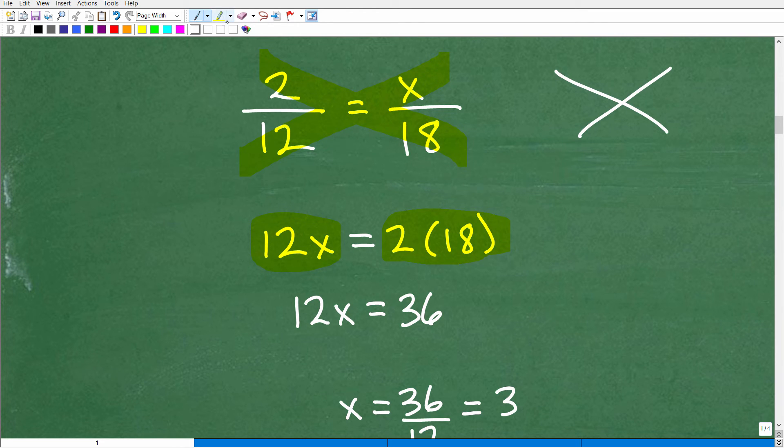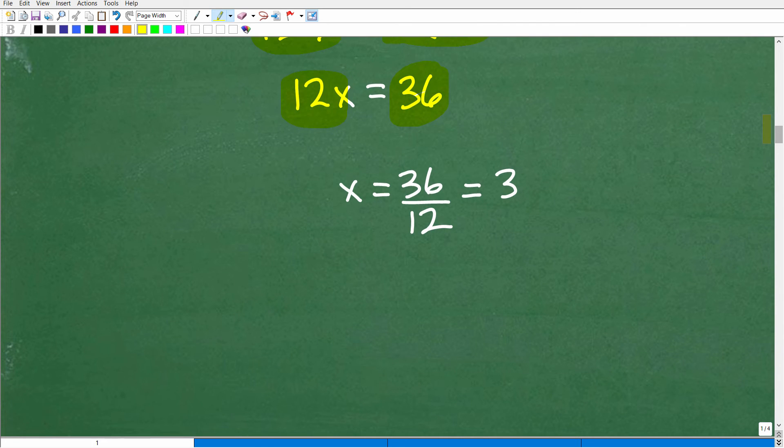So now let's go ahead and solve for x. Again, hopefully you have basic equation solving skills. If you don't, no problem. I can help you out with all this stuff, but 12x is equal to 2 times 18. That's going to be 36. And to solve for x, I just simply divide both sides of the equation by 12. So x would be equal to 36 divided by 12, which, of course, is 3.